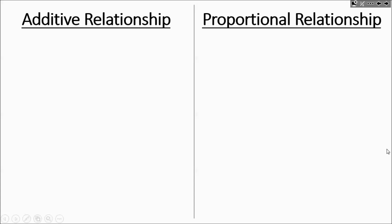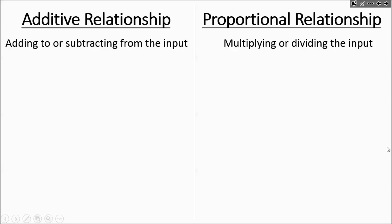Additive relationships are when you're adding to or subtracting from the input — the input being the x value. Proportional relationships are when you're multiplying or dividing the input. Here are some examples with equations: you've got two unknowns, here's the input, you're adding four. Here we have two unknowns and you're multiplying the input by four.